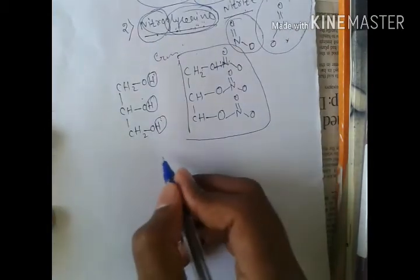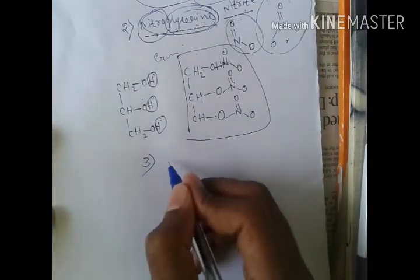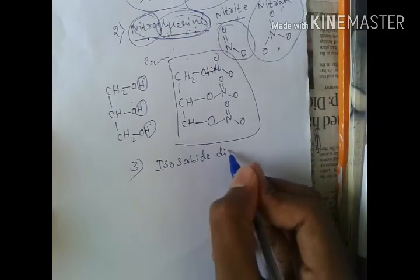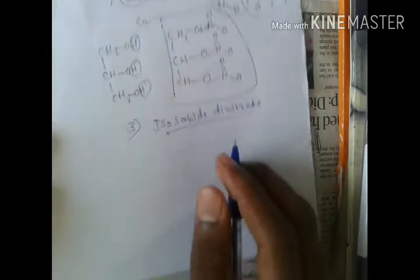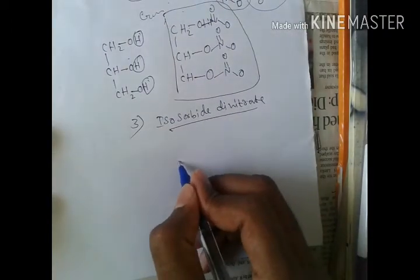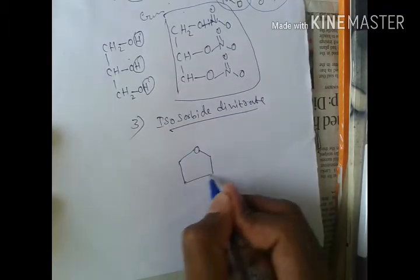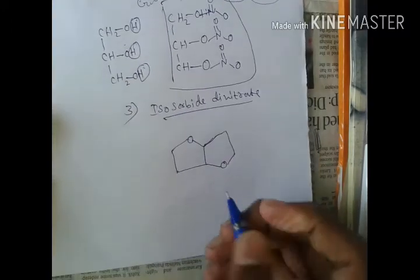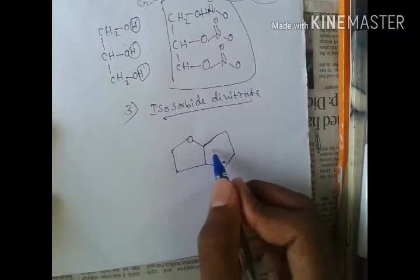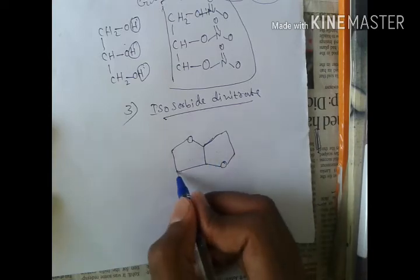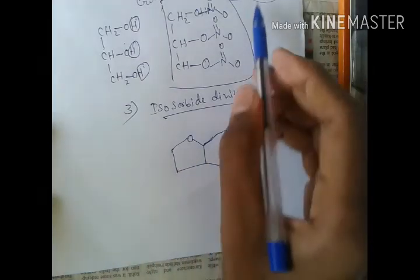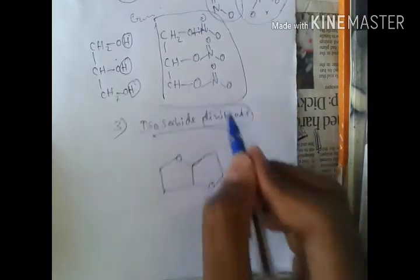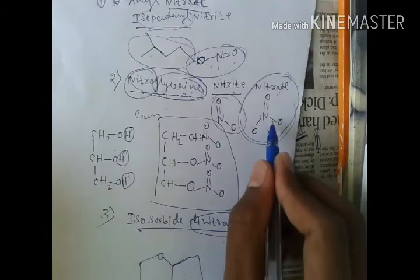Next structure is isosorbide dinitrate. For this you have to write two furan - two tetrahydrofuran fused rings. To this you have to add nitrate groups. You can see the nitrate group here - nitrate structure NO3 - you have to add in the third position. You can see here, nitrate.